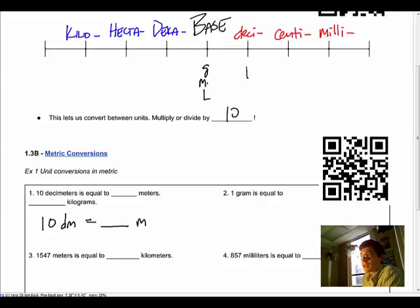I need to move one spot to my left, so my decimal comes one spot to my left and this becomes 1.0. So our answer is 1 meter, 1.0 meters. And that's all we're doing on this number line—we're swinging our decimals left and right.